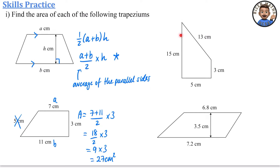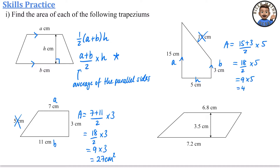For the next trapezium, the parallel sides are the two indicated, so they are a and b. The height — the perpendicular distance between them — is five, so the 13 is not needed. The area is (15 + 3) ÷ 2 × 5: that's 18 ÷ 2 = 9, and 9 × 5 = 45 cm².